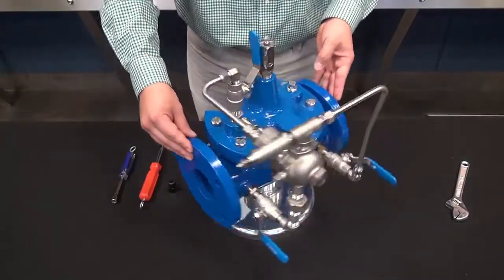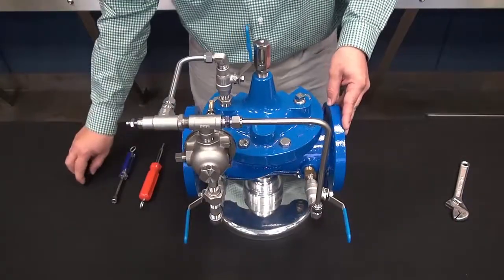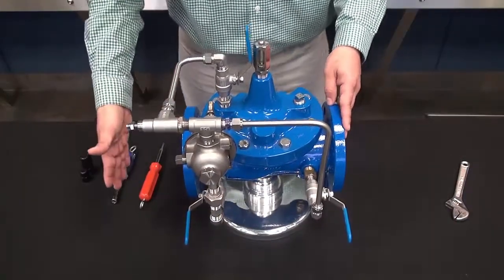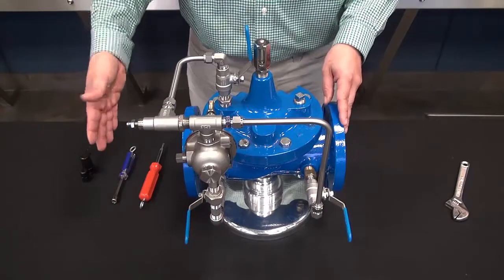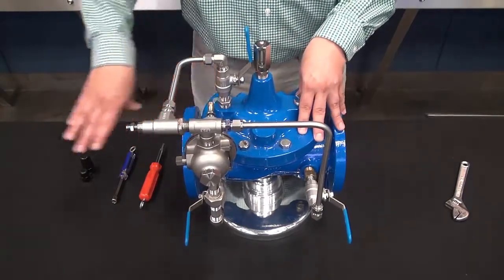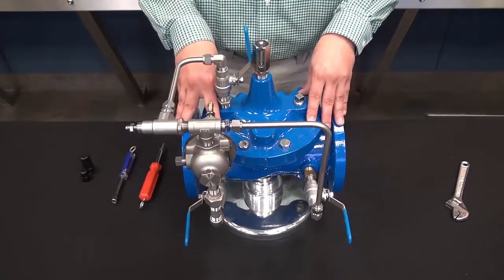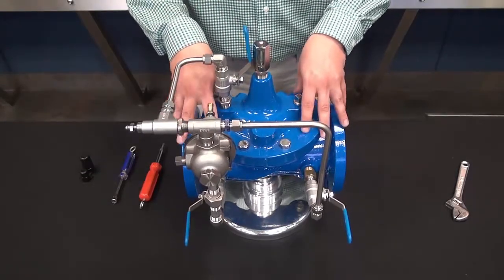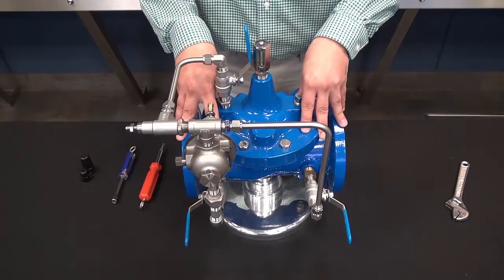Now that we know that we're at the lowest setting of the CRD, what we'll do at this point is we will slowly start to open up our downstream gate valve so that the main valve will open and start to introduce water into the system.